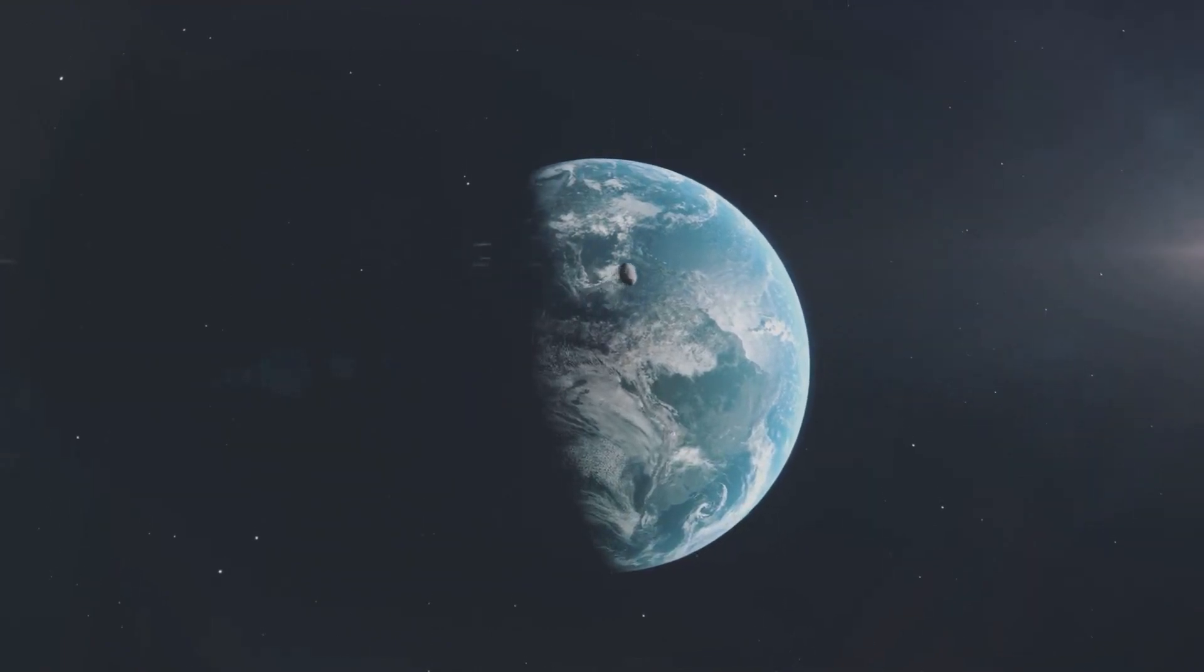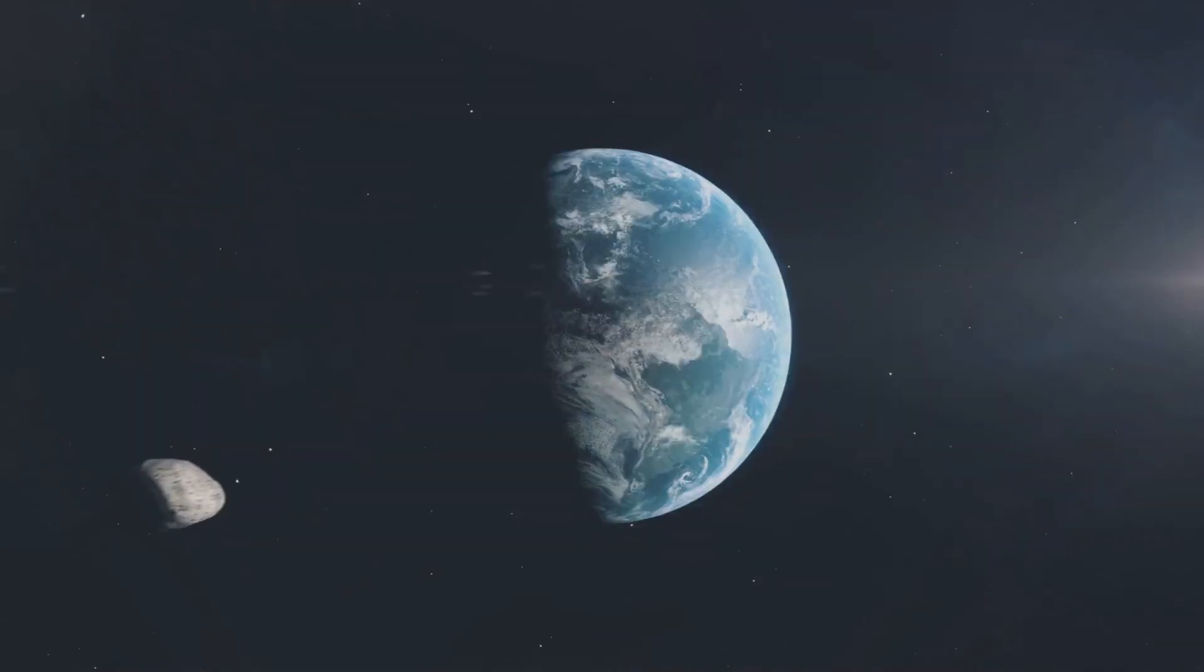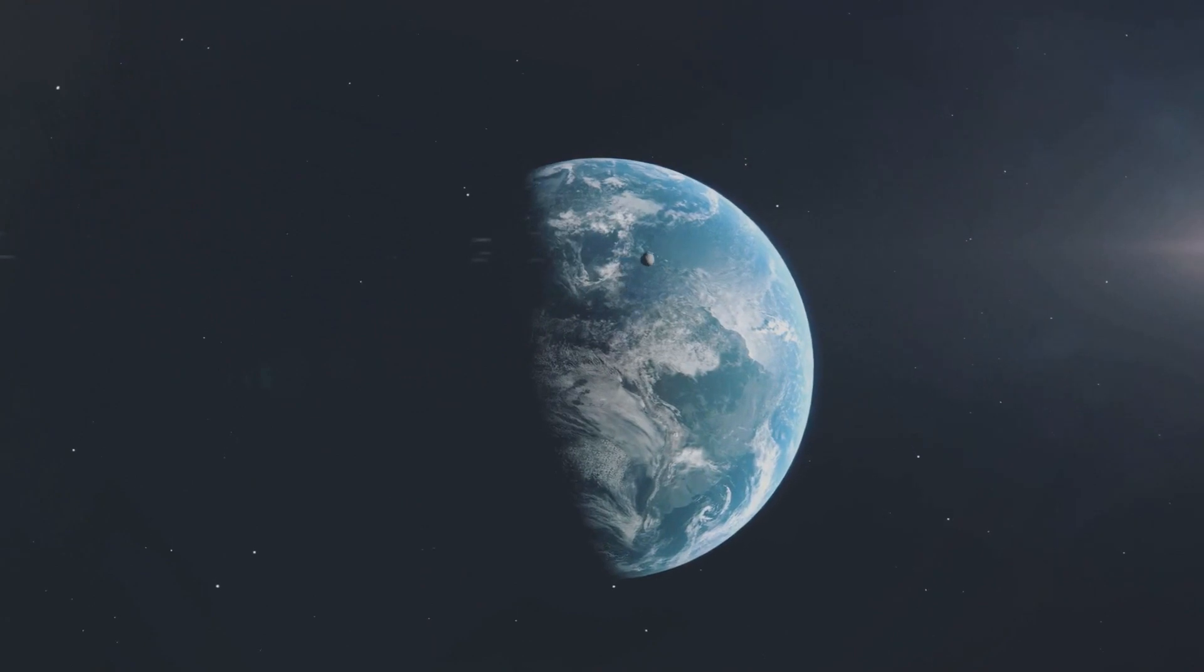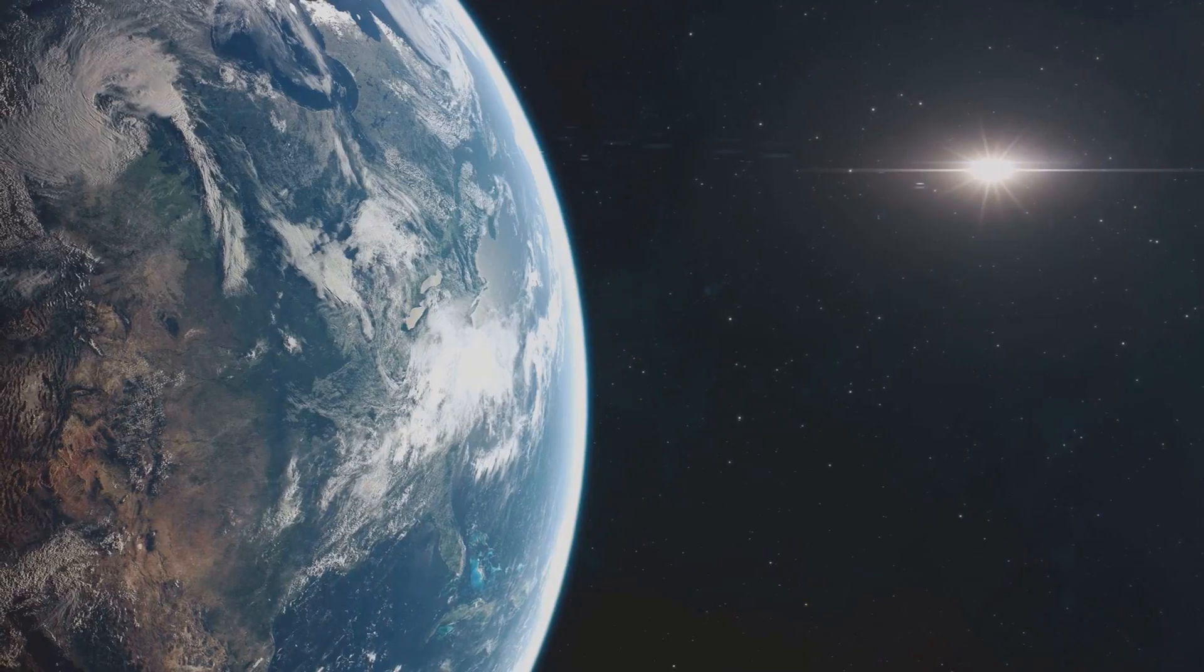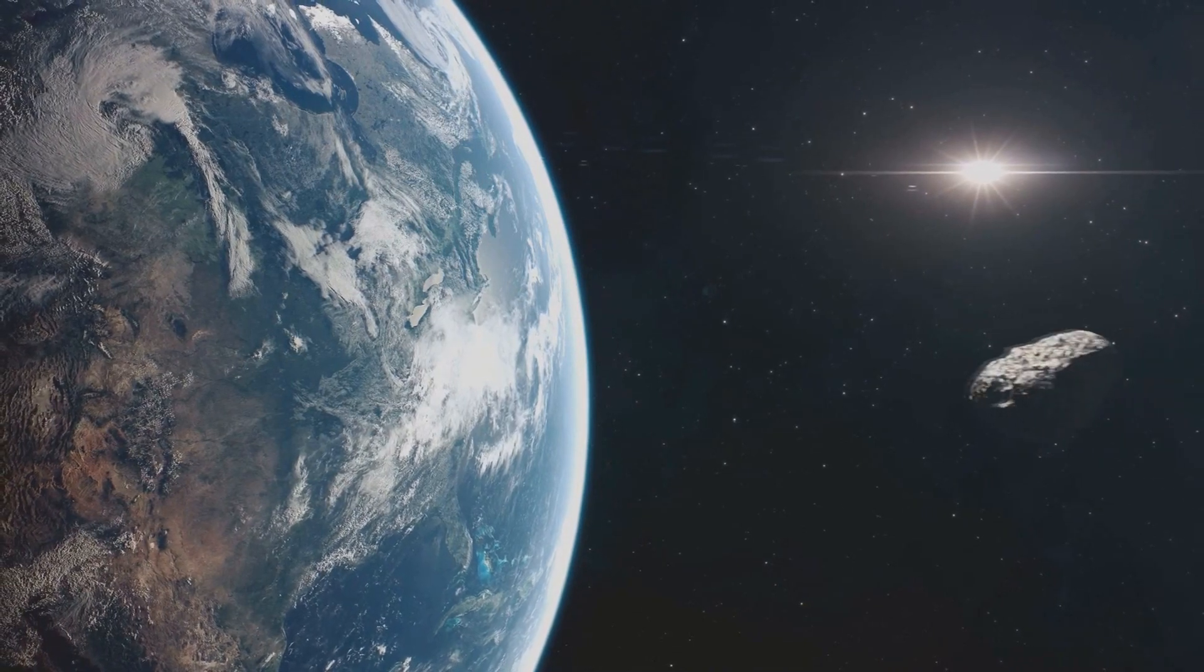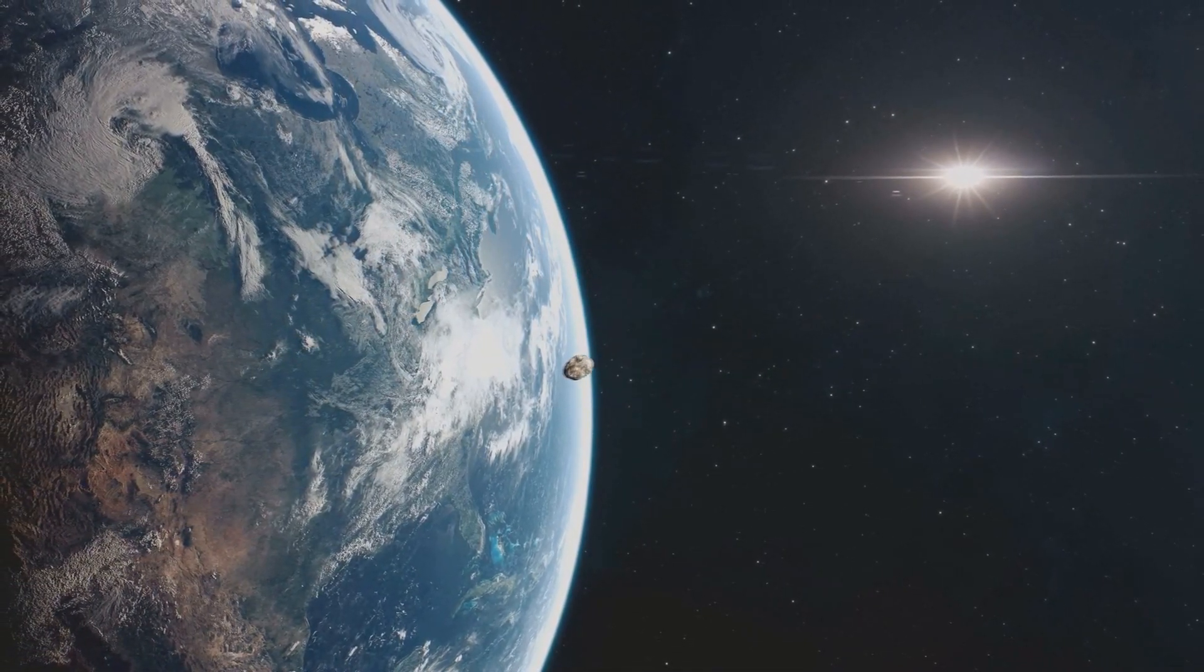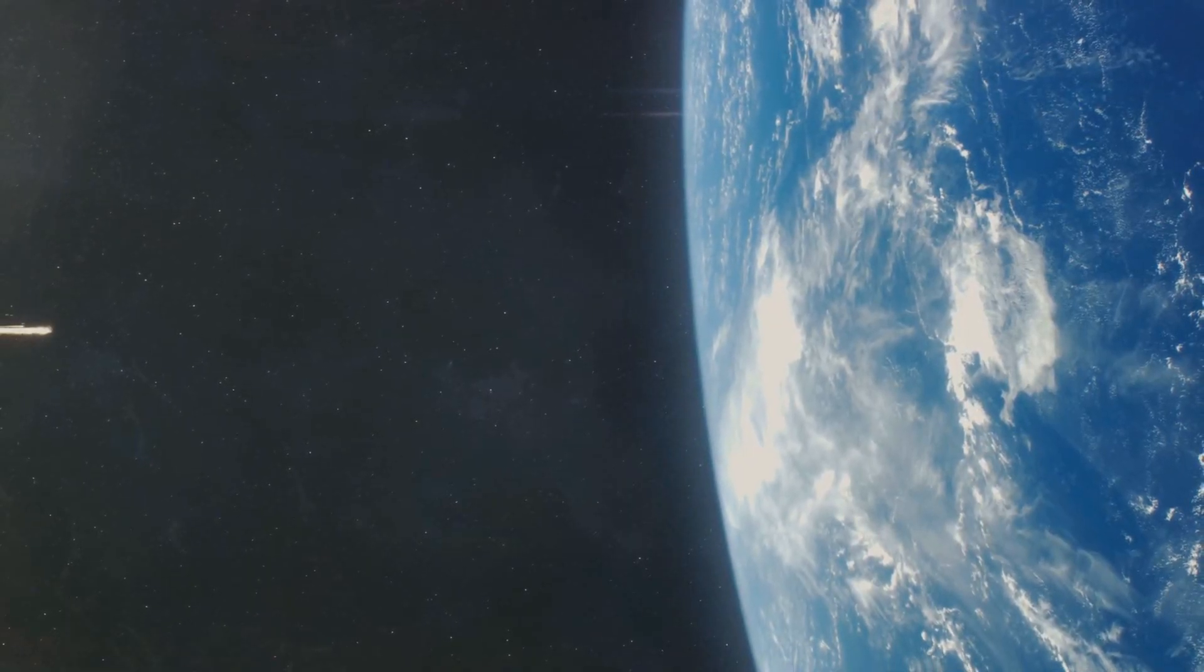History is replete with examples of such cataclysmic events. Remember the dinosaurs? Their reign on Earth was curtailed by an asteroid impact, a fiery ball of devastation that came hurtling down from the heavens, causing a mass extinction. The Chicxulub impactor, as it is known, left a crater more than a hundred miles wide in what is now the Yucatan Peninsula.